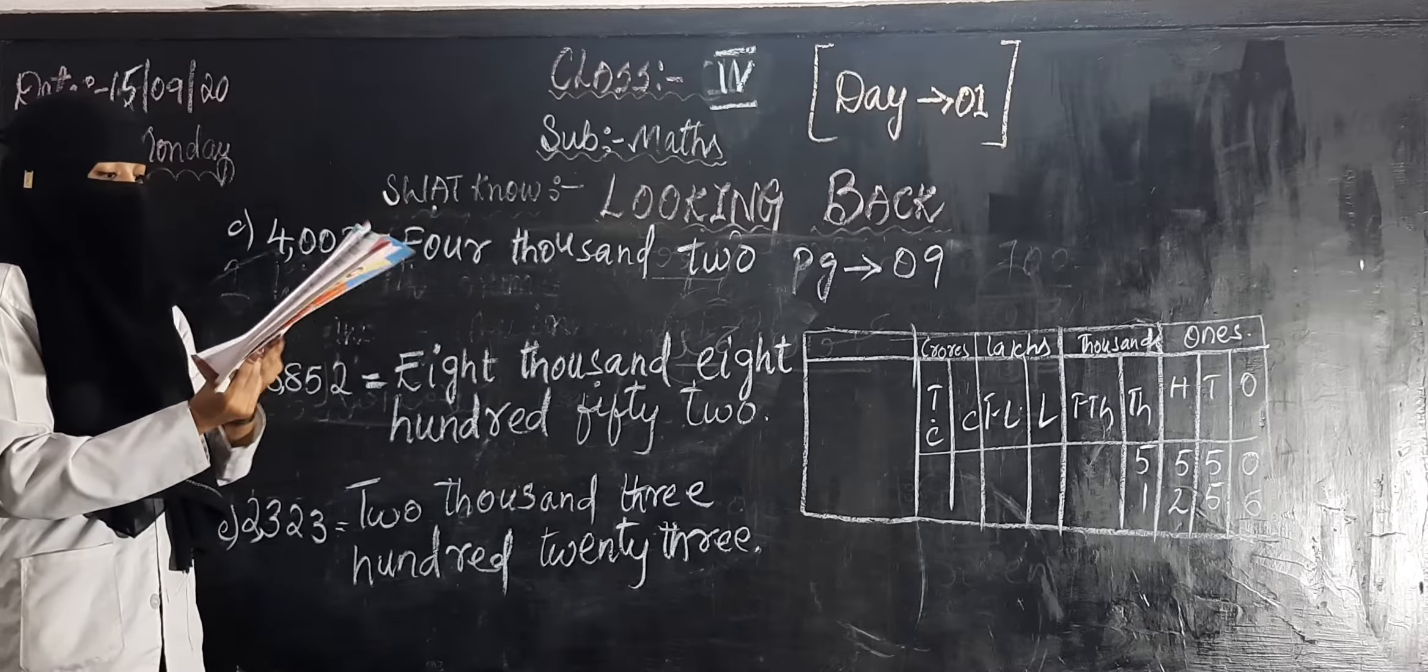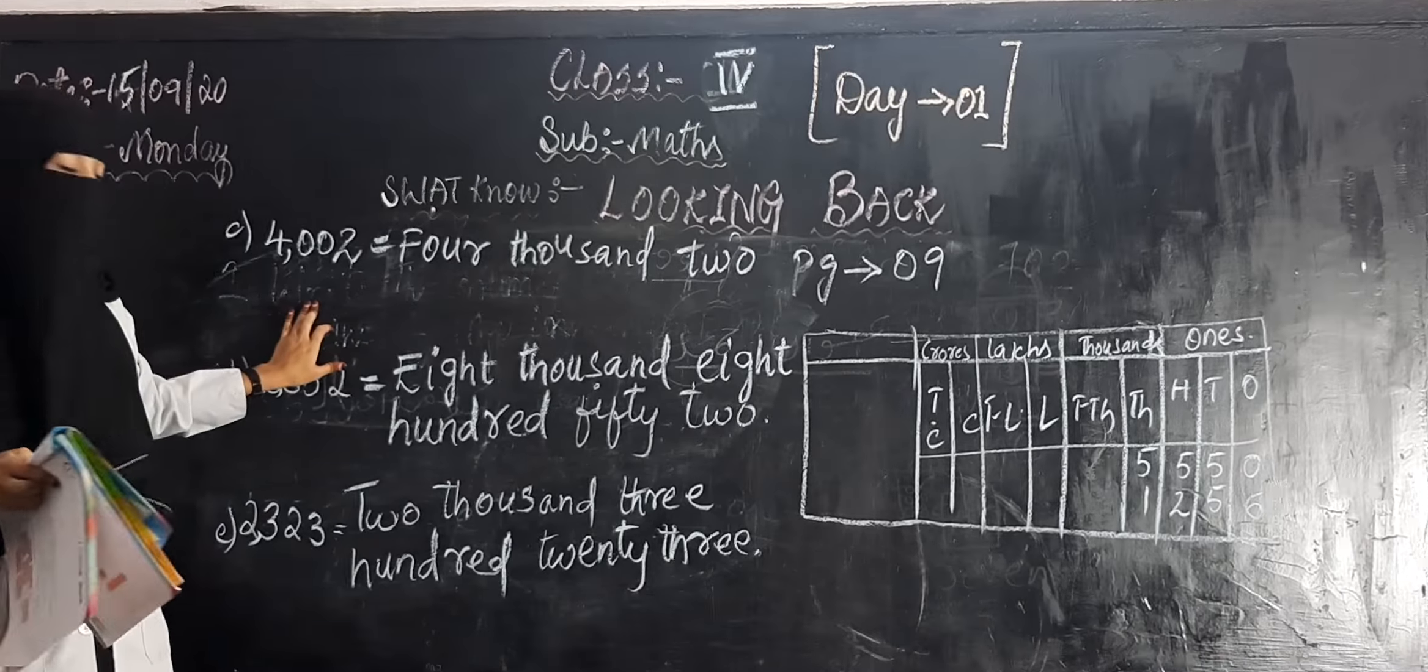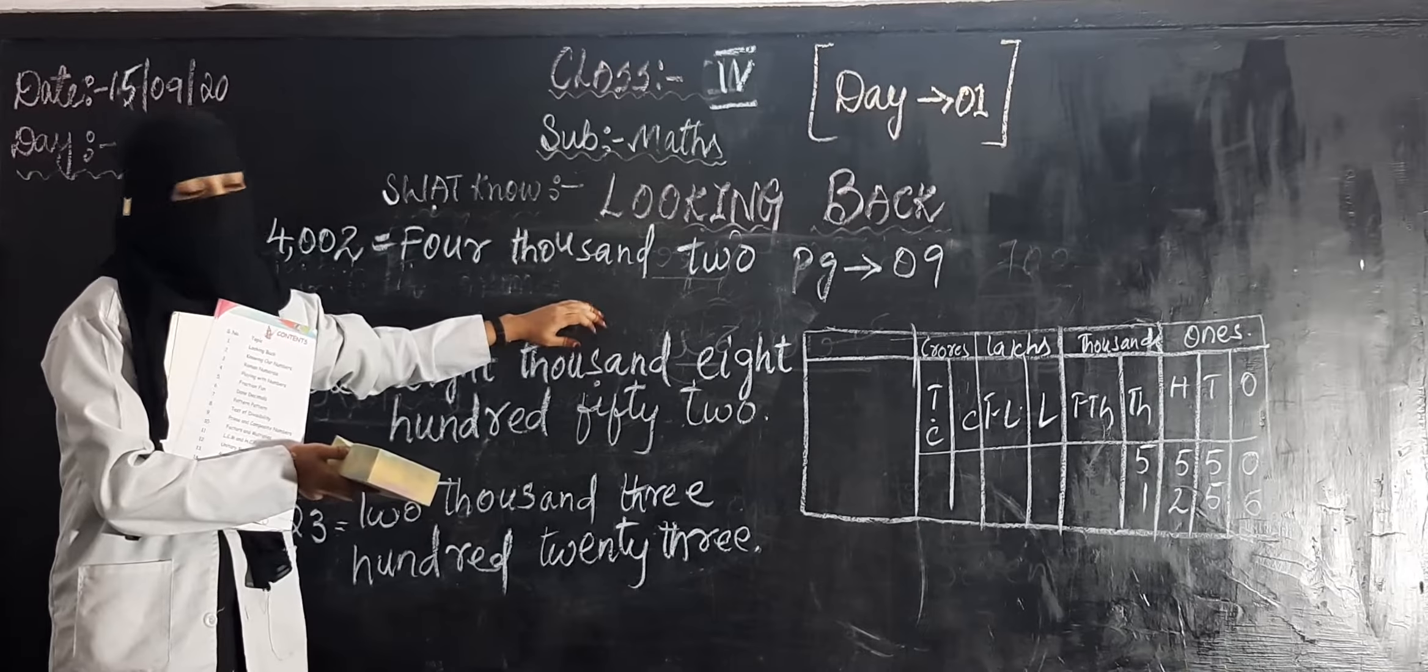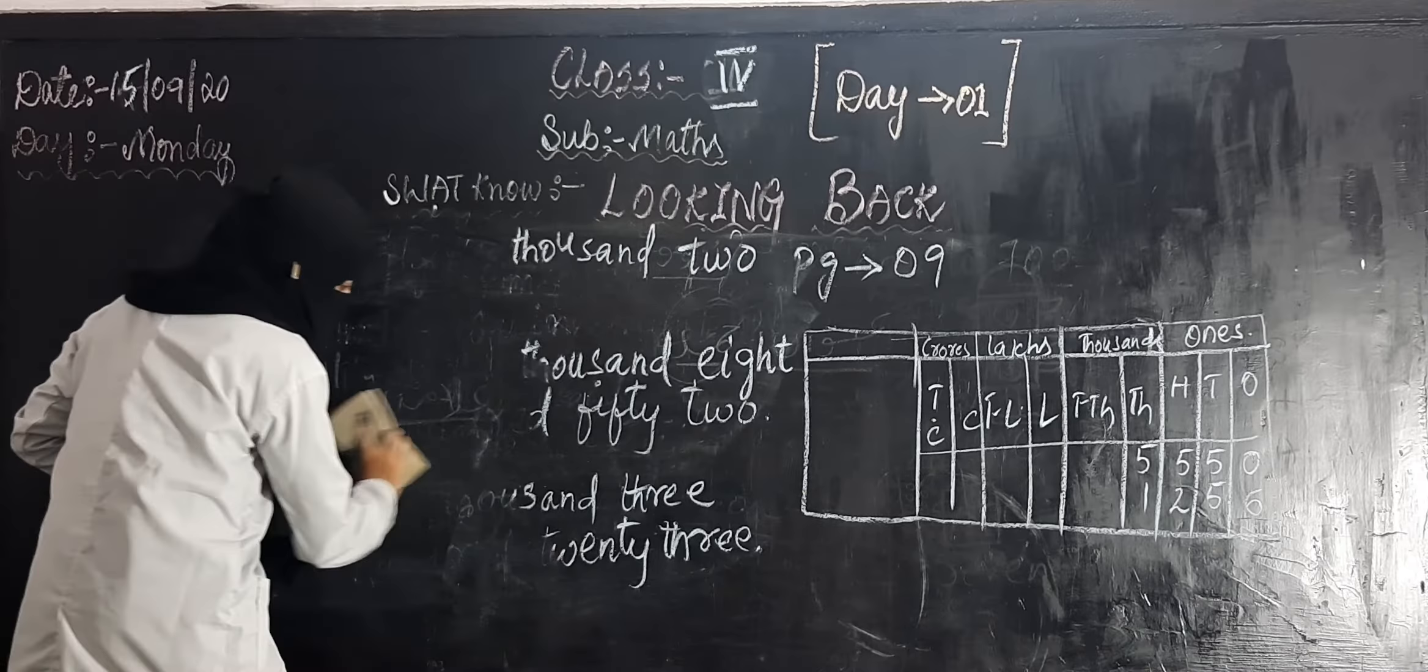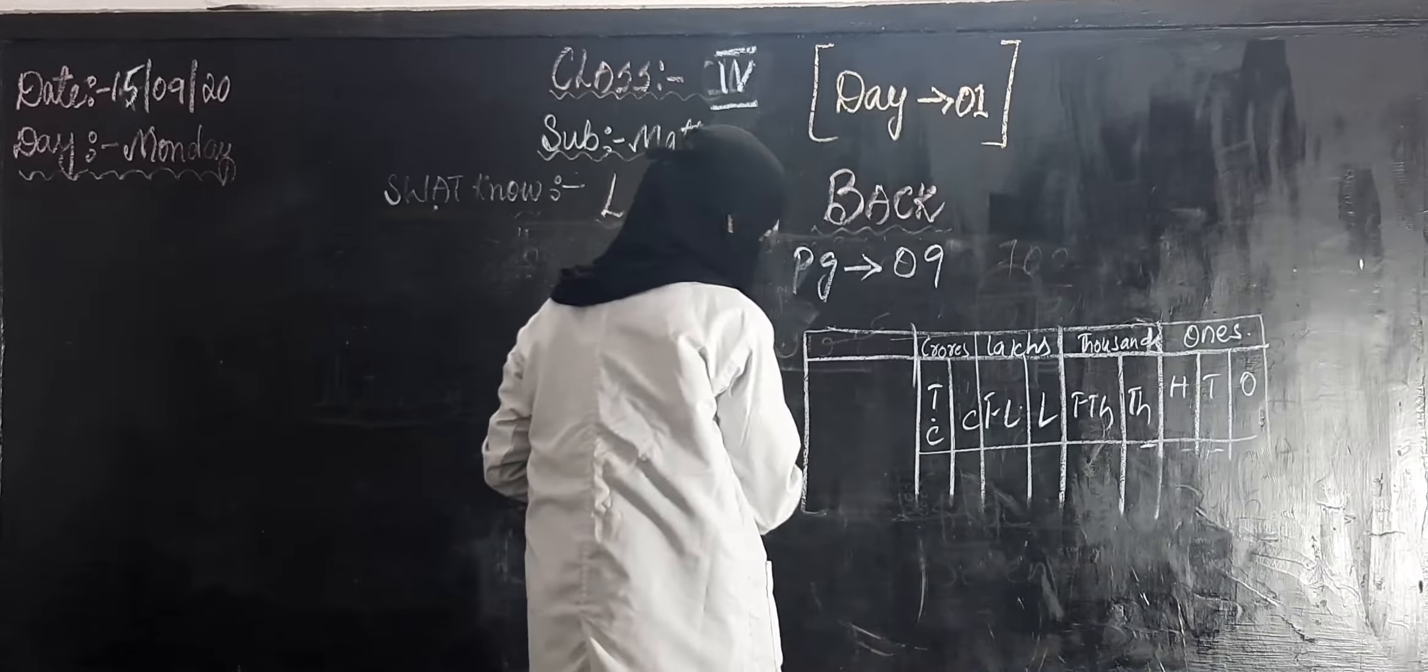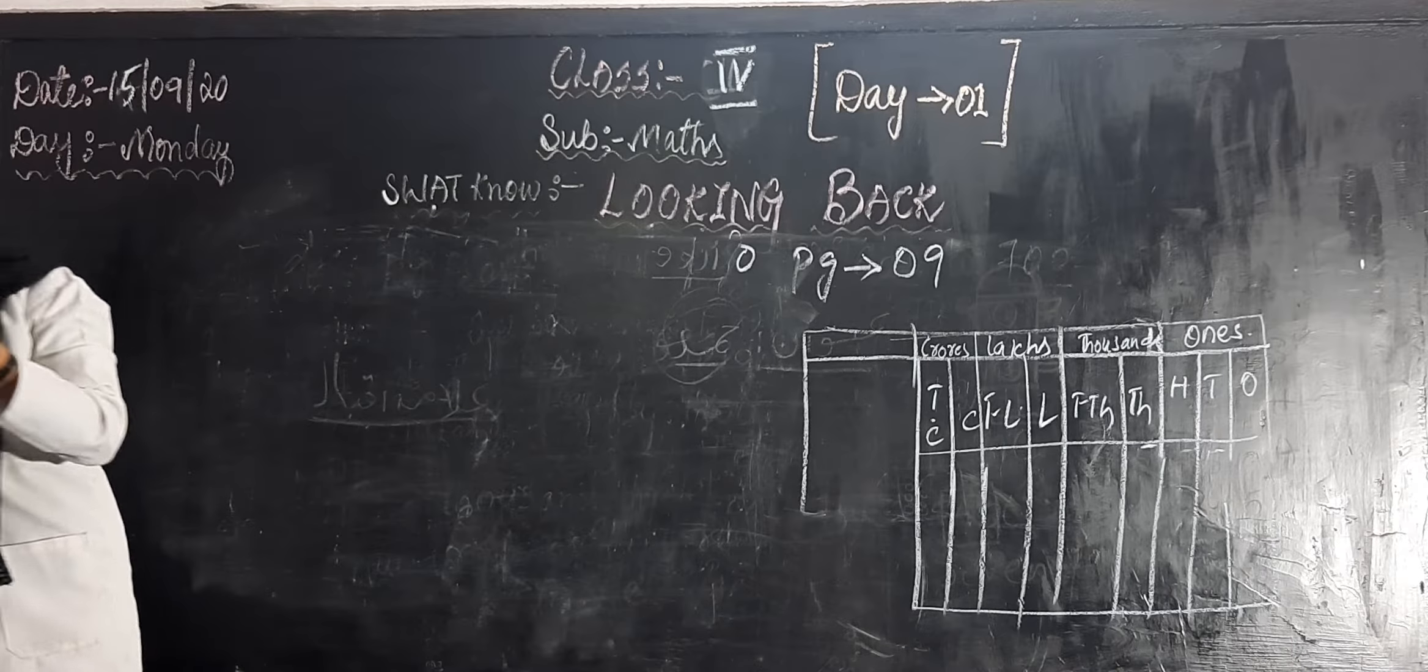Okay children. Next, first section is here, number name was given. So you had to write the number name. You understood that. Second section is on page number nine only, write numerals for the following number name. In first section, number was given. Now you have to write it in figure.